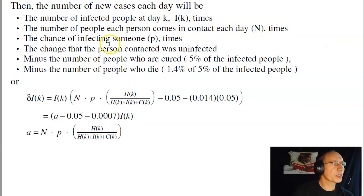So with those assumptions, I can now calculate the number of new infected people each day. The number of new infected people will be proportional to the number of infected people times the number of people they come in contact with times the probability of transmitting the disease if you come in contact with them times the probability that the person you come in contact with is infected minus the number of people that are cured minus the number of people that die. That's the increase in the number of people that are infected.